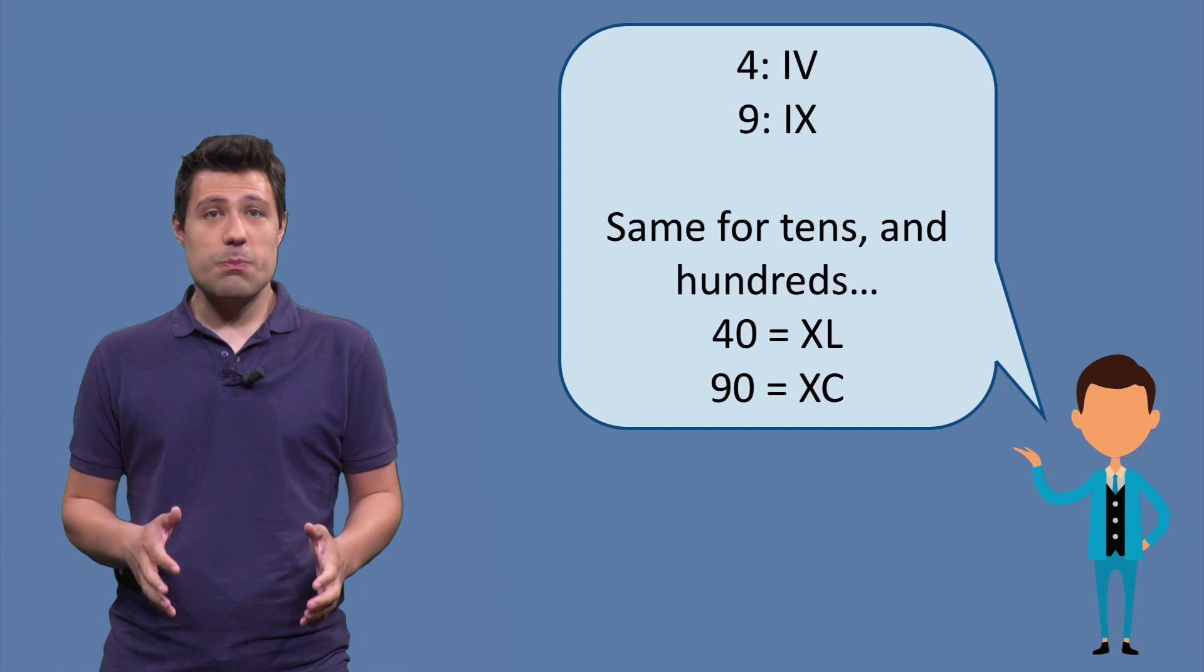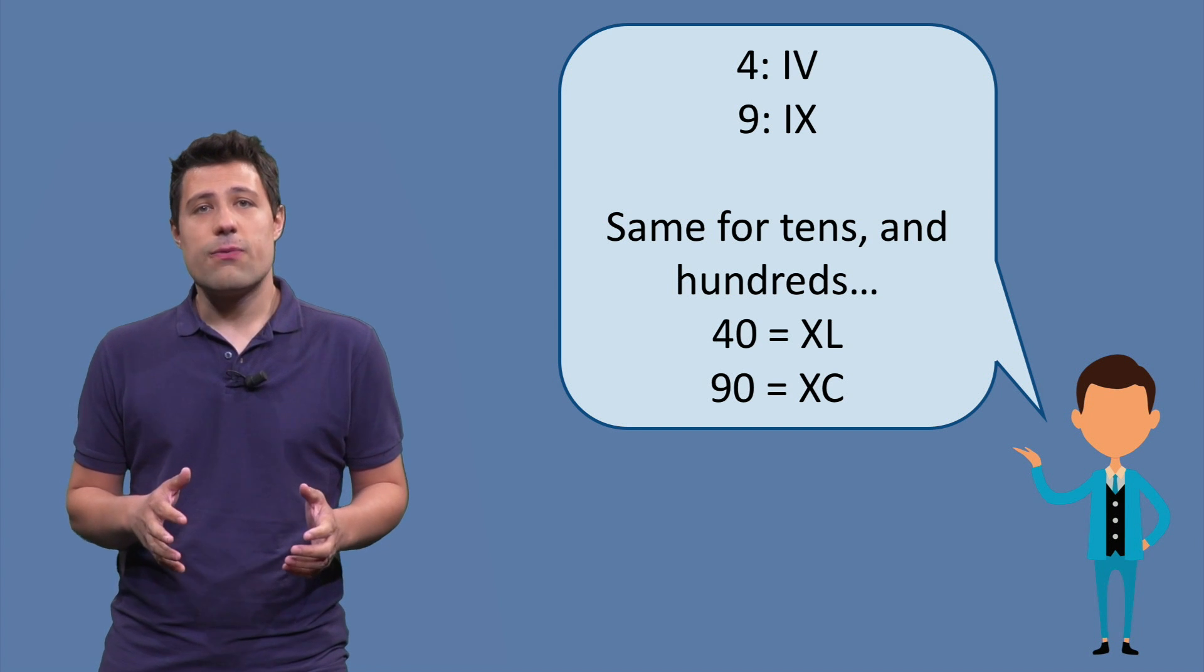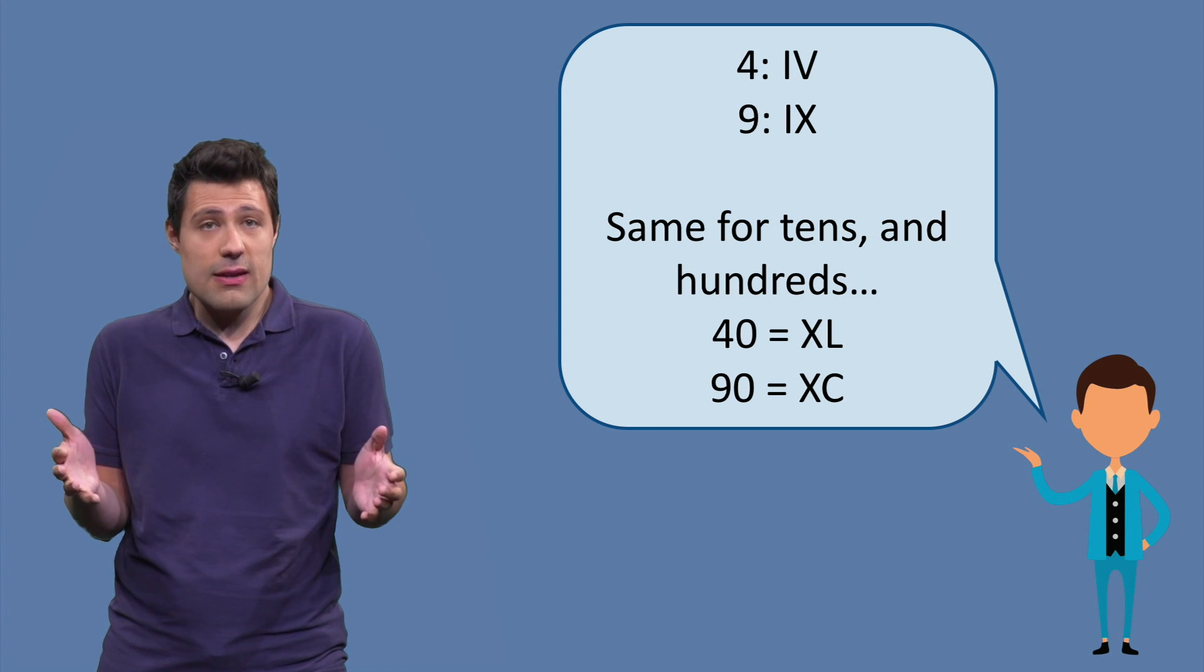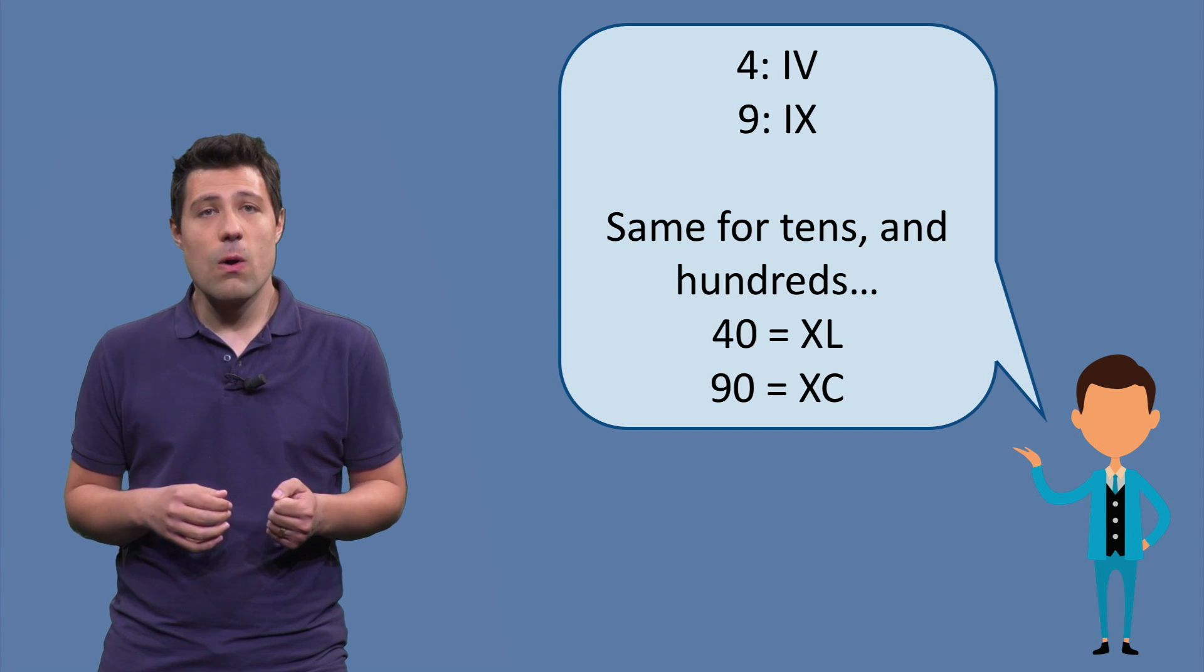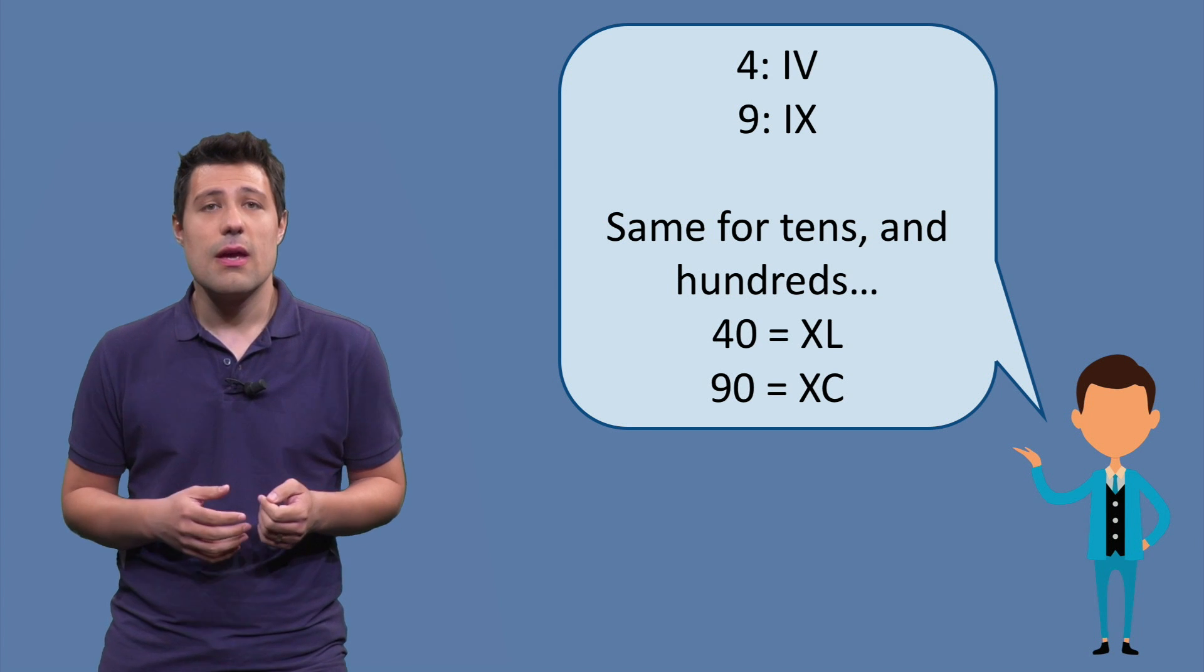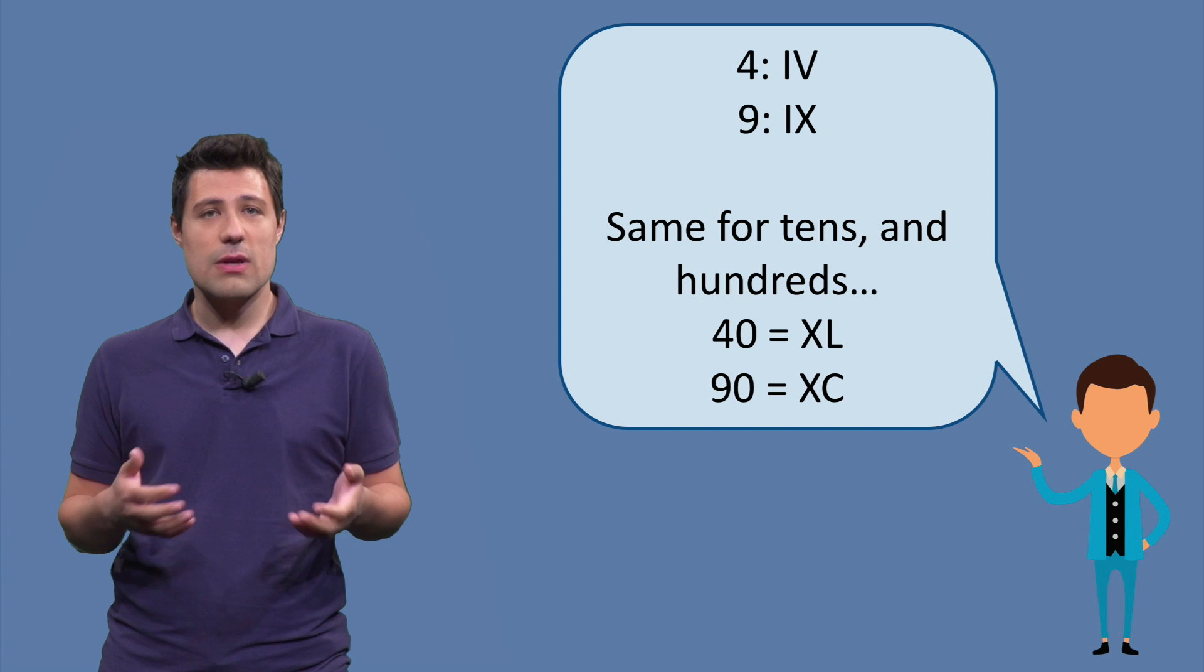But some numbers cannot be represented by that rule. For example, the number 4 is not I, I, I, I, but instead it's IV. Or the number 9, it's not V, I, I, I, I, but it's IX. And this is called the subtractive notation.